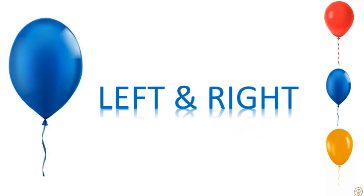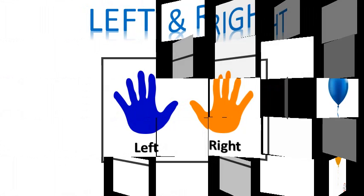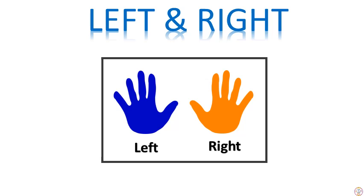Our next concept is left and right. Now let's understand the concept of left and right. For this, you kids need to place your hands in front of the screen. The palm that is matching with the blue one is your left hand, and the one that is matching with the orange is your right hand.